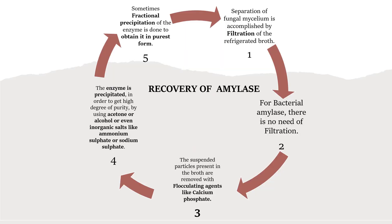Recovery of amylase: Separation of fungal mycelium is accomplished by filtration of refrigerated broth. For bacterial amylase, there is no need for filtration. The suspended particles present in the broth are removed with flocculatory agents like calcium phosphate. The enzyme is precipitated to obtain a high degree of purity by using acetone, alcohol, or inorganic salts like ammonium sulfate or sodium sulfate. Sometimes, fractional precipitation of the enzyme is done to obtain it in the purest form.